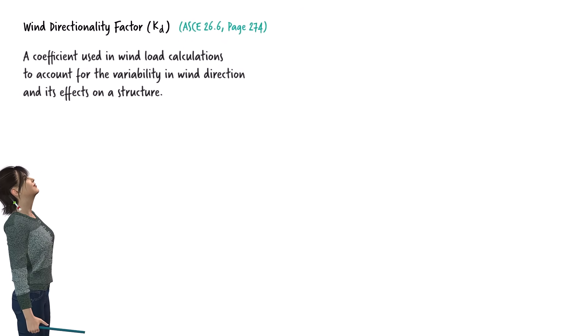The wind directionality factor is a numerical adjustment that we use to account for the reduced likelihood that the strongest wind forces will always strike a structure from the most critical direction.